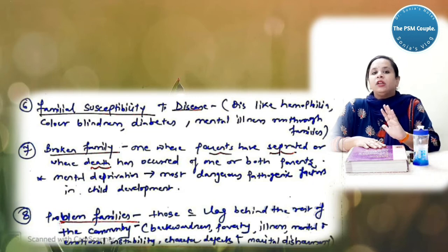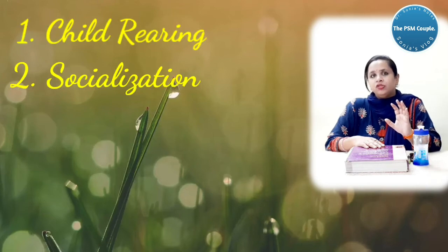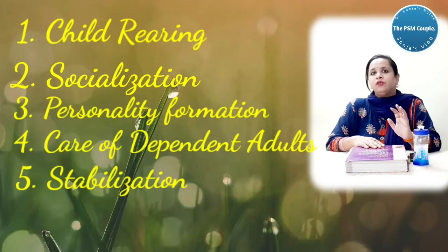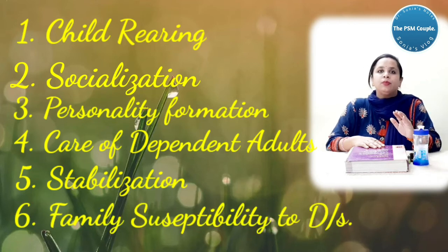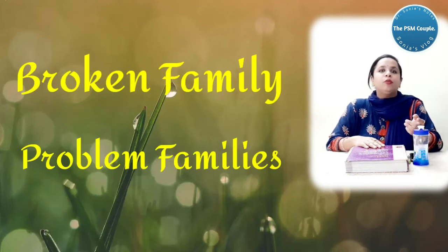Then last is your problem family. Problem family means every time in the family they will have certain problems. Like you will see backwardness, poverty, mental illness, emotional instability, character defects, and marital disharmony. Certain couples will keep on fighting or will destroy the environment of your family. What is family in health and disease: child rearing, socialization, personality formation, care of your dependent adults, stabilization of the adult personality, family susceptibility to disease like hemophilia, colorblindness, diabetes, mental illness. You have broken family and you have problem families.